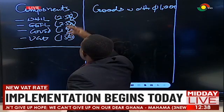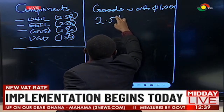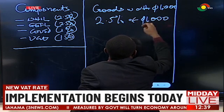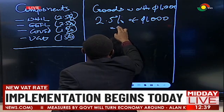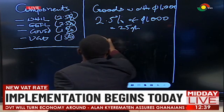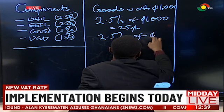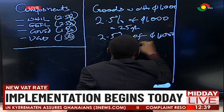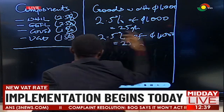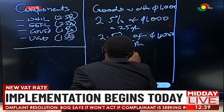So when you buy goods worth 1,000 cedis, what usually happens is that first, the NHIL will be applied to 1,000 cedis. So you have 2.5% of 1,000 cedis, which is going to give you 25 cedis. Because GetFund is also 2.5%, that too will also be 25 Ghana cedis. Now there's a COVID levy, which is 1% of the 1,000 cedis, so 1% of 1,000 will give you 10 Ghana cedis.